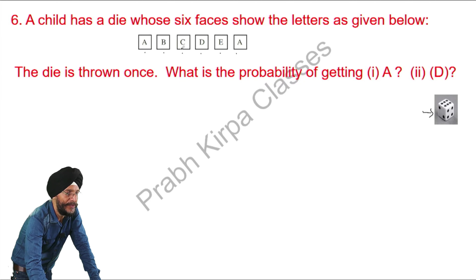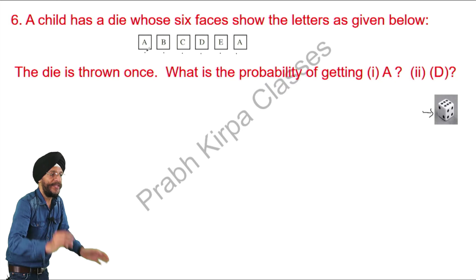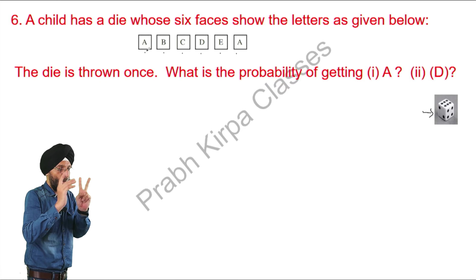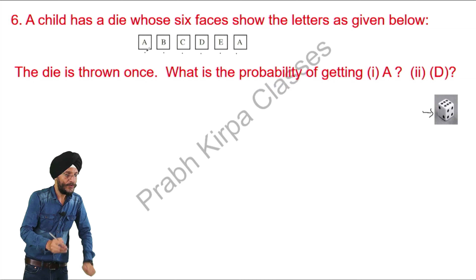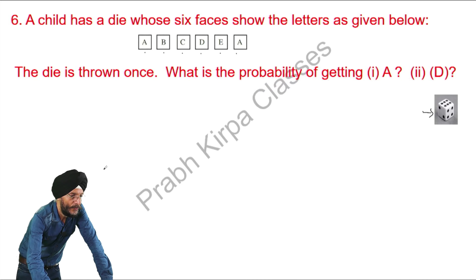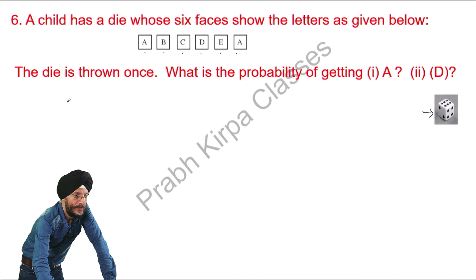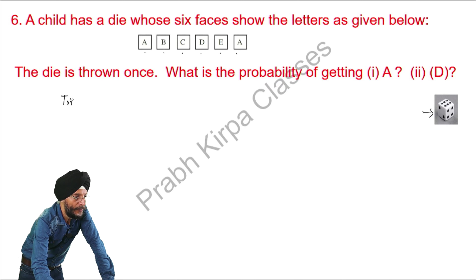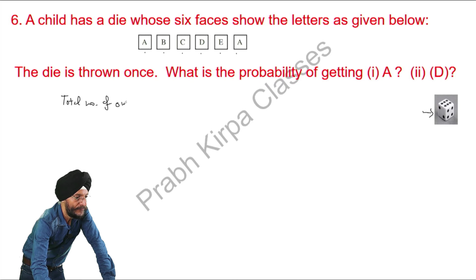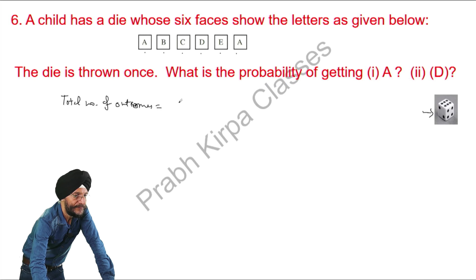A is appearing on the die twice. So we will now solve the question. Total number of outcomes — the total number of faces are 1, 2, 3, 4, 5, 6. That is 6.